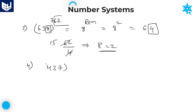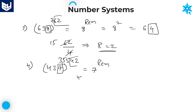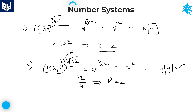Next example: 437 to the power of 542. The number is ending with 7, therefore the required units place is 7 power remainder. Don't take the entire power value — take only the last two digits: 42. Dividing 42 by 4 gives a remainder of 2. Substitute: 7 power 2 = 49, therefore the required units place value is 9.